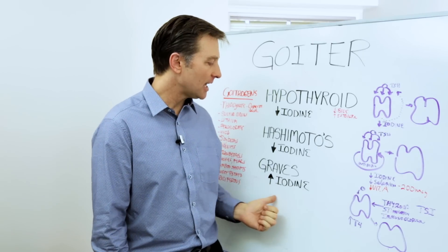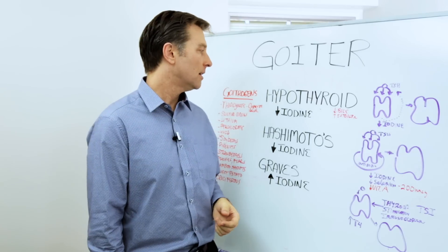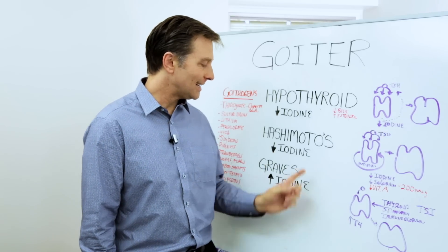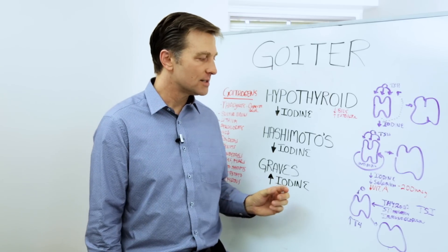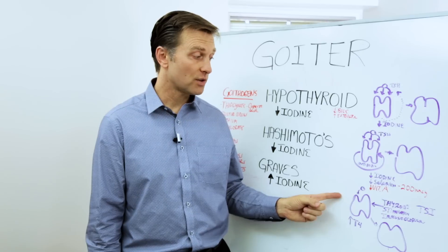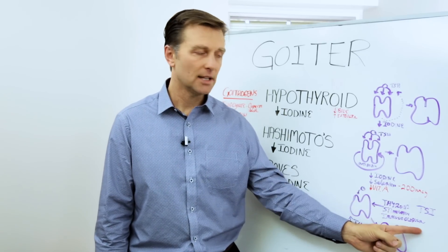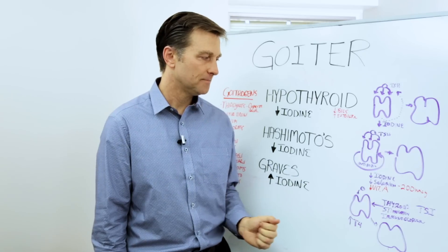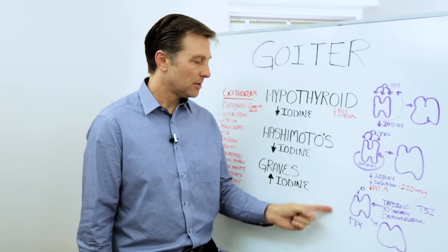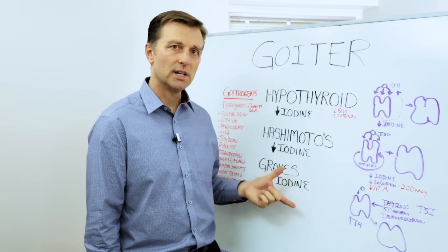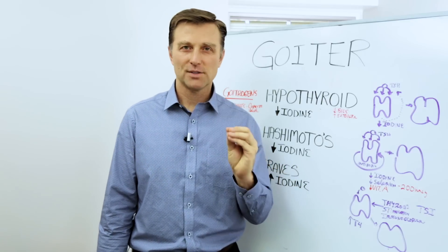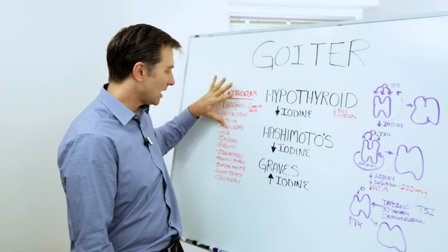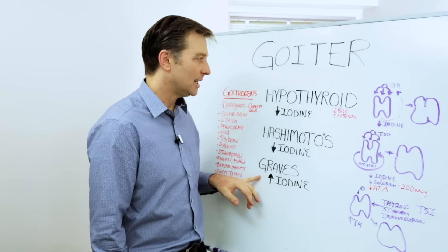Then we have Graves', which is a high amount of thyroid hormone production — a hyperthyroid problem. That person has too much iodine, so you're not going to give more iodine in a Graves' situation. The reason the thyroid enlarges with Graves' is because the immune system is creating something called thyroid-stimulating immunoglobulin, TSI, and that is what's making the gland bigger — not the pituitary, but this immune reaction. You never want to give a person with Graves' more iodine, or bile or gallbladder support, because that will increase conversion and make more hormone. Those iodine-depleting foods would actually be beneficial for Graves' because they'll lower iodine.